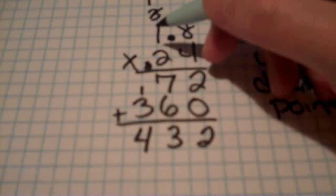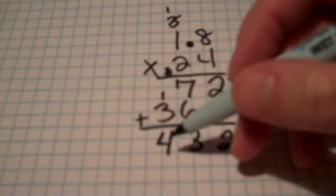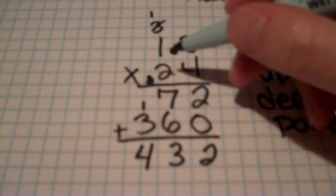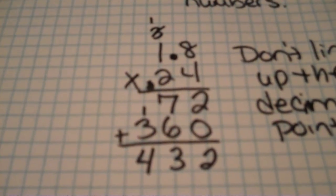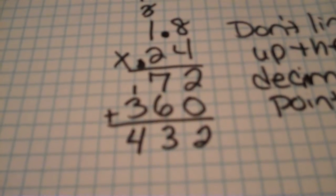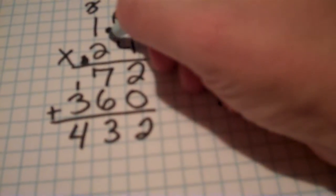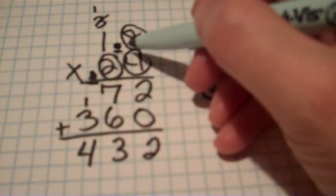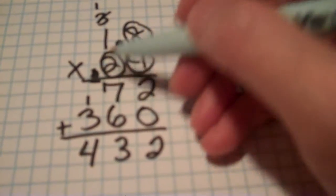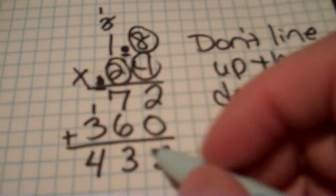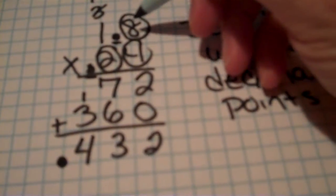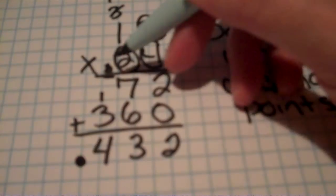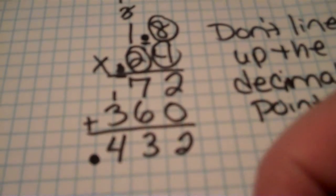If I was just multiplying 18 times 24 my answer would be 432. But since I'm multiplying 1.8 times 0.24 I need to place a decimal point in this answer. The way that we figure out how many decimal places are in the answer is we count how many numbers are behind the decimal point. The 8 is behind the top decimal point. The 2 and the 4 are behind the bottom decimal point. So that's three numbers behind decimal points. If there were three numbers behind the decimal point in the problem there will be three numbers behind the decimal point in the answer.